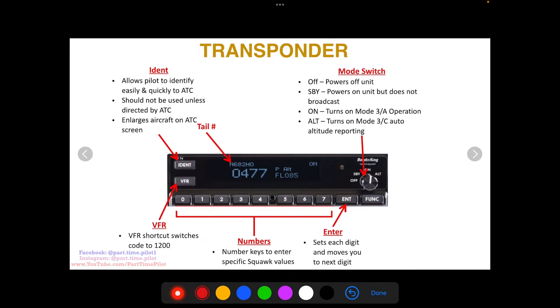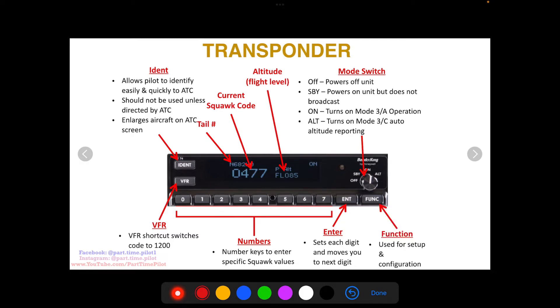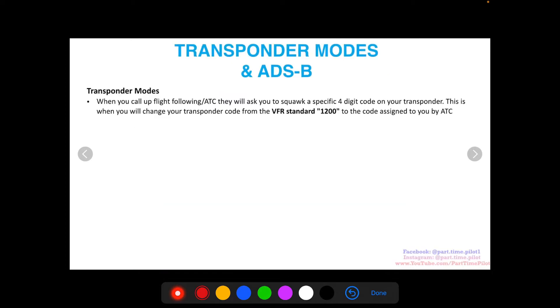Your tail number will be entered here, you have the squawk code, and then flight level or altitude. Flight level 085 is 8,500 feet. This has a function button as well, only used for setup and configuration.